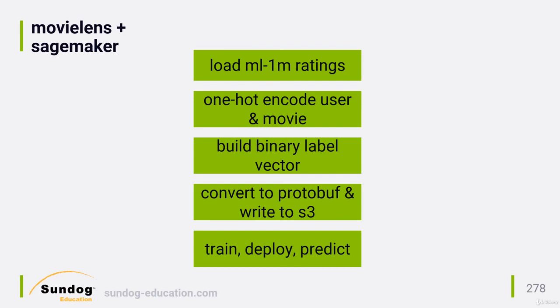Once we have our sparse ratings vectors and label vectors ready for both our training and test data sets, we convert them to the ProtoBuf format SageMaker expects and write them to S3, where SageMaker can access them.